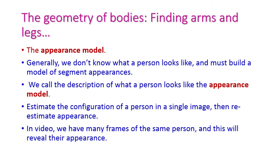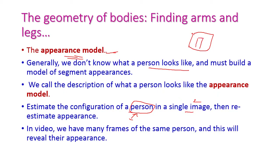The next topic is the appearance model — how a person looks in an image. To identify this we use the appearance model. First, we estimate the configuration of a particular person in a single image, then we estimate how the person appeared in that image. In a video we have many frames of the same person, which reveals their appearance across those frames.